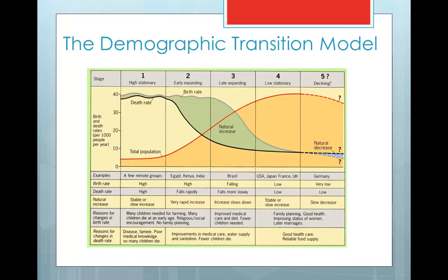The demographic transition model traditionally is broken up into five stages. Stage one has one classic feature: it has a very high death rate and also a very high birth rate. Because of this, it leads to a very low total population.